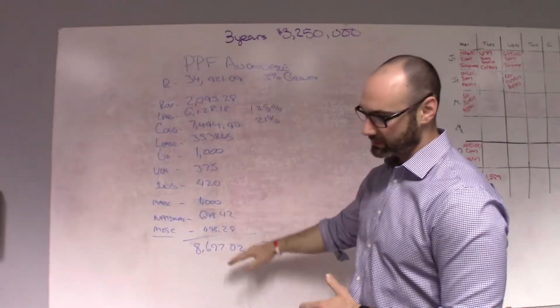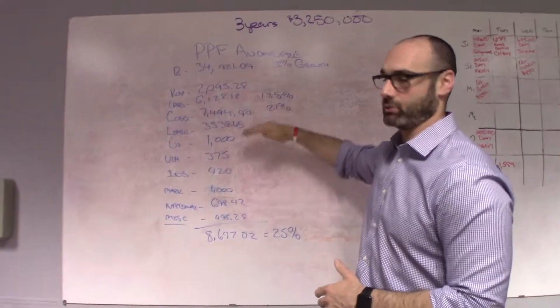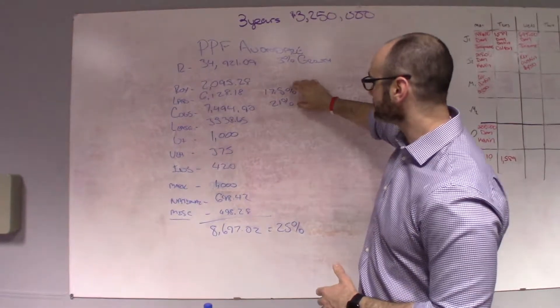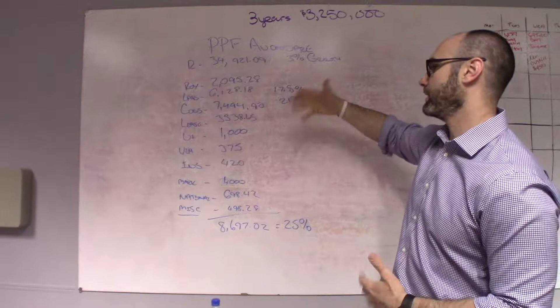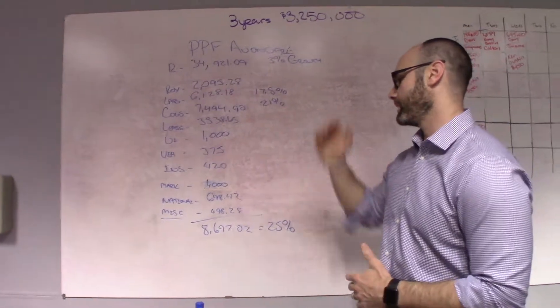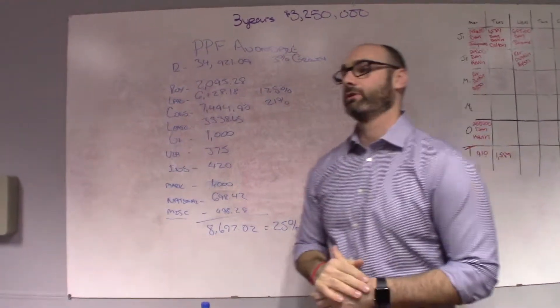We're showing some nice consistent growth and consistent scheduling. So, that helps with our variable cost, which is our labor. Obviously, cost of goods is a variable cost as well, and everything else is pretty much fixed. Royalties, obviously, is based on revenue.